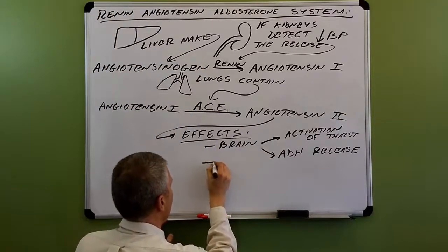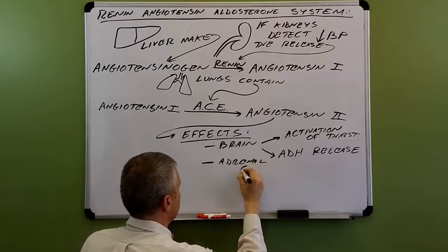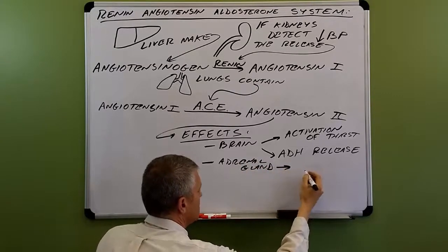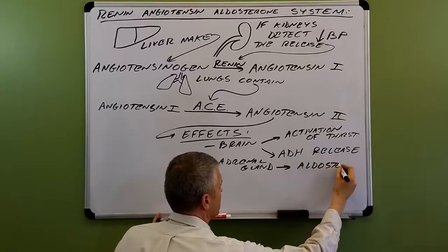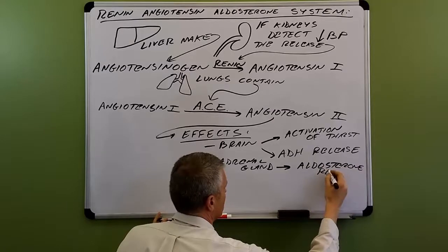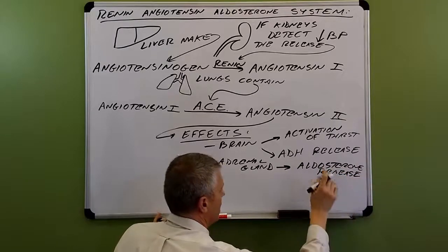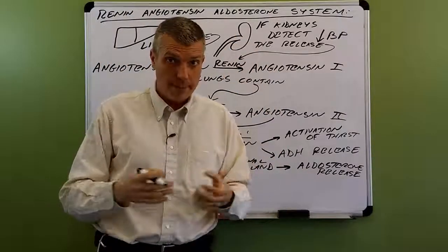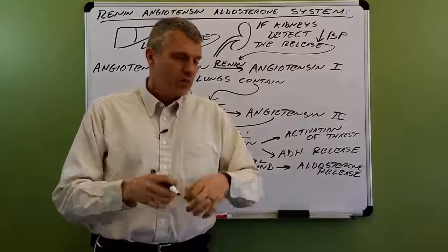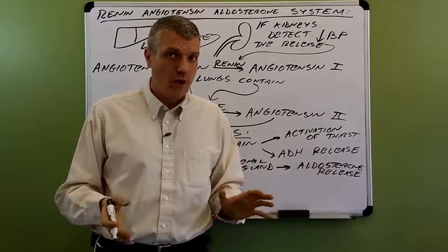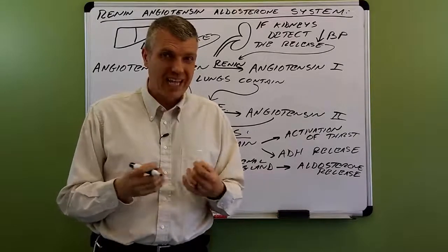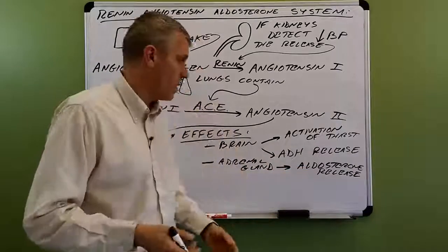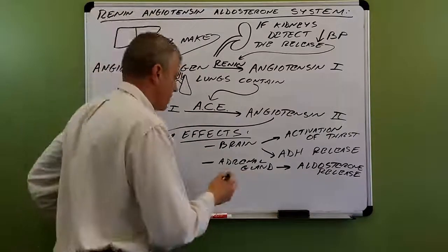Next, we'll talk about the adrenal glands. Angiotensin-2 stimulates aldosterone release from the adrenal glands. Aldosterone is a hormone that tells the kidneys to retain more sodium. When you retain more sodium, you retain more water because sodium is very osmotically active and really attracts water. So by retaining more sodium, we retain more water.